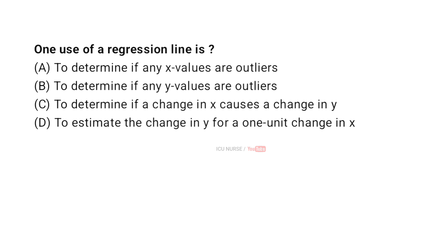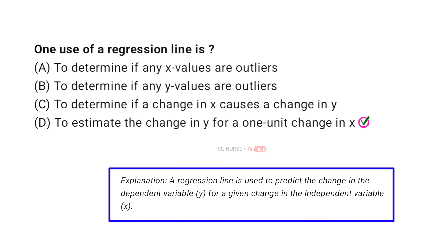One use of a regression line is: A: to determine if any x values are outliers, B: to determine if any y values are outliers, C: to determine if a change in x causes a change in y, D: to estimate the change in y for a 1 unit change in x. The correct answer is D. A regression line is used to predict the change in the dependent variable y for a given change in the independent variable x.